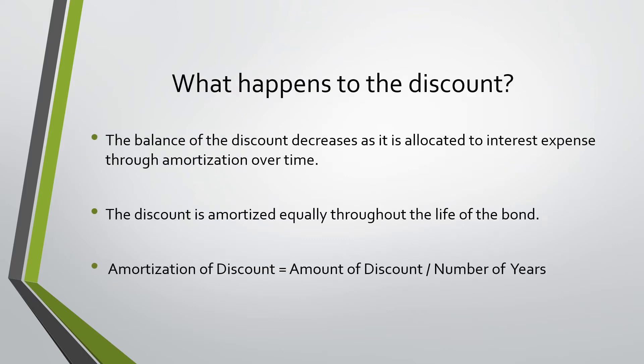What happens to the discount? The balance of the discount decreases as it is allocated to interest expense through amortization over time. The discount is amortized equally throughout the life of the bond. Amortization of the discount equals the amount of discount divided by the number of years.